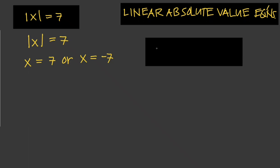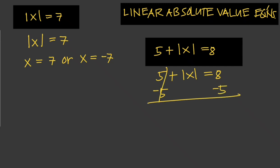Let's say we're given 5 plus absolute value of x equals 8. The absolute value here is not alone, so we have to subtract 5 from both sides. So 5 plus absolute value of x equals 8, minus 5 on both sides — this cancels out, leaving us with absolute value of x equals 3. So x could either be 3 or x equals negative 3.